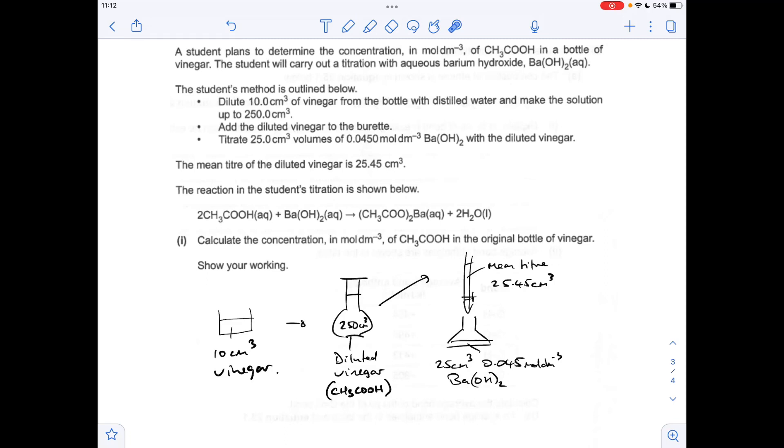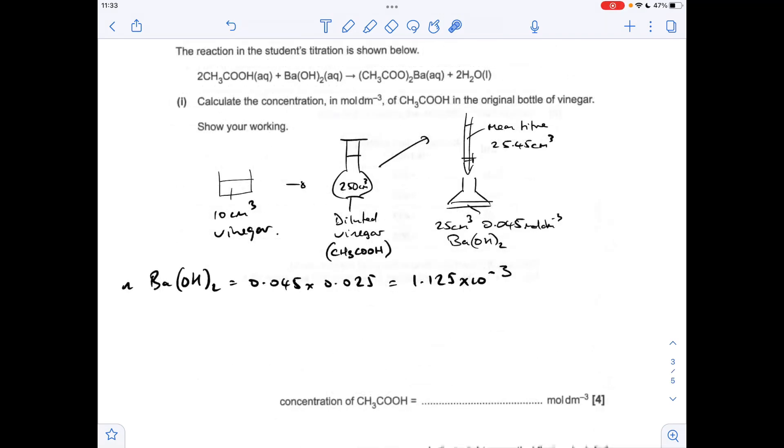So the first thing I'm going to work out is the moles of barium hydroxide that have been used in the titration. So concentration times volume, just remember the volume has to be in decimetres cubed. That's coming out at 1.125 times 10 to the minus 3. Applying the mole ratio, there must be twice as many moles of ethanoic acid present in this mean titra. That's 2.25 times 10 to the minus 3.